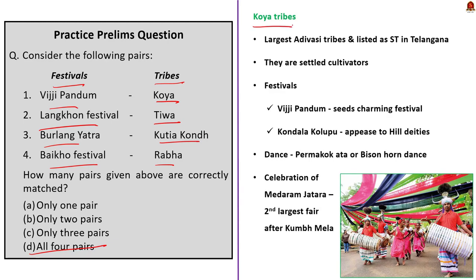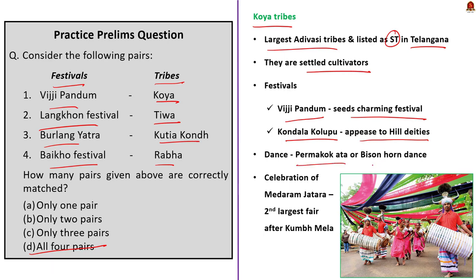About the Koya tribe: Koya is the largest Adivasi tribe of Telangana, listed as a scheduled tribe in Telangana, and spread across Telugu-speaking states of Telangana and Andhra Pradesh. Koyas are mainly settled cultivators. Their main festivals are Vijipandam, a seed charming festival, and Kondalakalupu, a festival to appease hill deities. Koyas also perform a colorful dance called Permakok Atta (bison horn dance) during festivals and marriage ceremonies. Additionally, the Koya tribes celebrate Medaram Jatara — the second largest fair in India after Kumbha Mela — celebrated for four days.